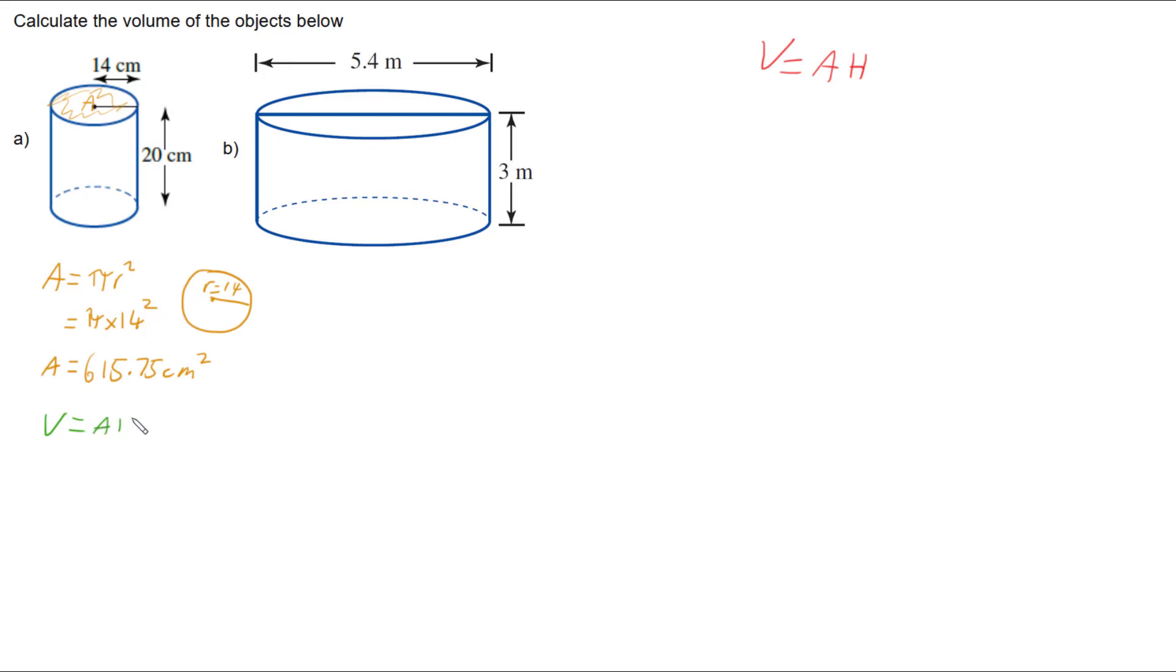We then need to work out volume by taking that area and multiplying by height. Our height is the 20 centimetre height that's given there. So we're going to have 615.75 multiplied by 20, giving us a volume of our first cylinder to be 12,315.04 centimetres cubed.